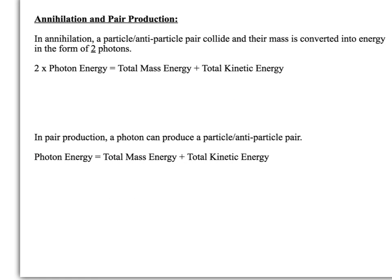So how does this relate to annihilation and pair production? So you should know that in annihilation, when a particle and an antiparticle pair meet, their mass is converted into energy, because mass and energy are interchangeable by that famous old equation. The next thing you should know is that you get two photons being produced.